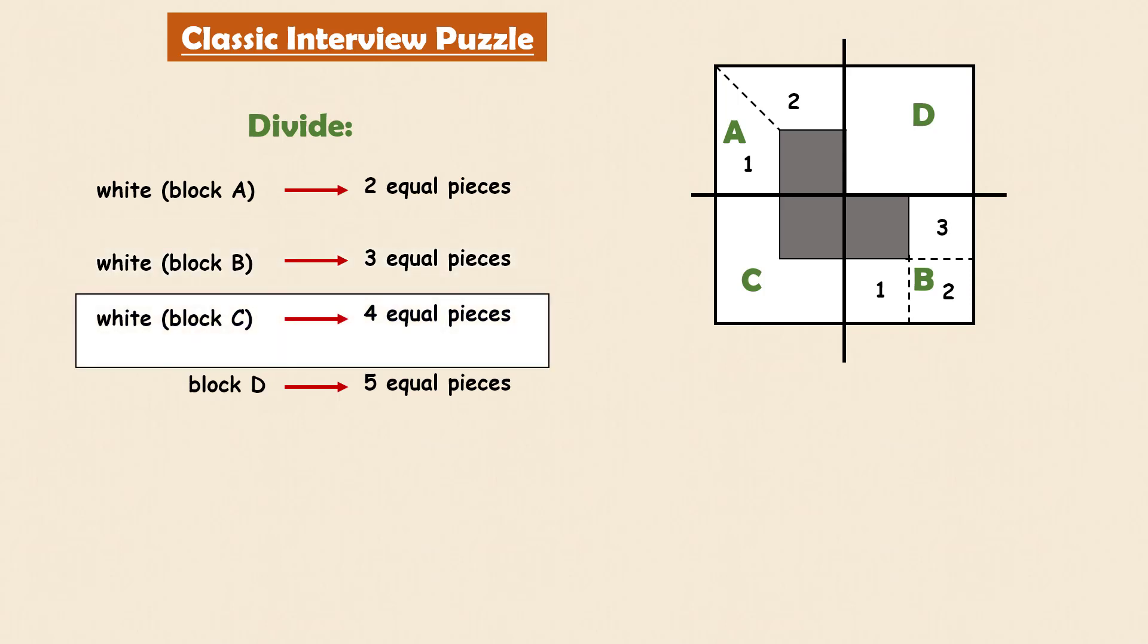Now it gets challenging to divide the white region of block C into four pieces because it's an irregular shape. You may apply your geometry skills to solve the third task but here is the first lesson for you that can make the job very easy to achieve. Try to improve your observation to figure out analogies, patterns, hidden objects, etc. around us.